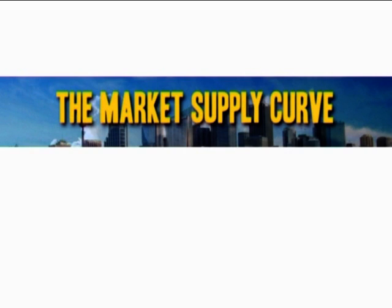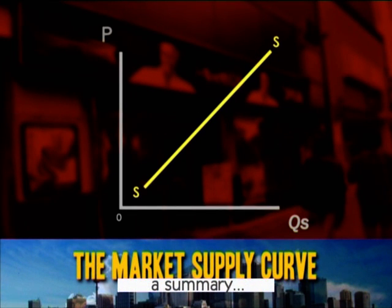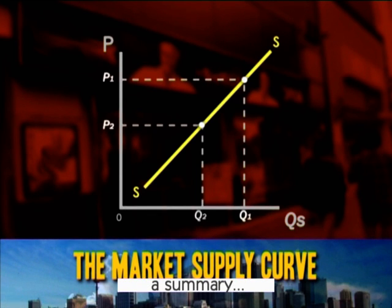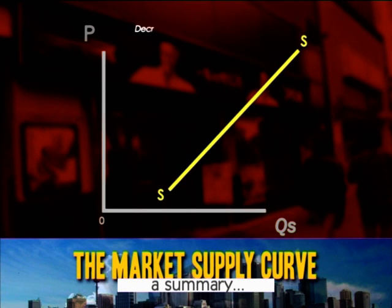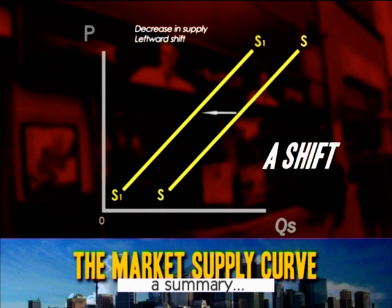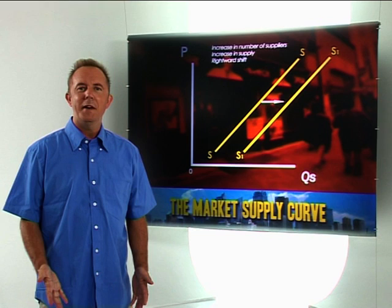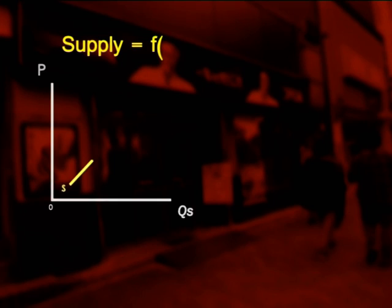To recap, our supply equation now reads: supply is a positive function of the price, Px. A rise in the price causes an increase in the quantity supplied and a movement up the supply curve. If the price falls, we get a movement back down the curve. There is a negative relationship between supply and the cost of production — an increase in the cost of production causes suppliers to produce less at each price, so there is a leftward shift of the supply curve and a change in supply overall. A drop in costs will cause a shift the other way. An increase in the number of suppliers, improvements in technology, and an increase in expected price will also cause a rightward shift of the supply curve.